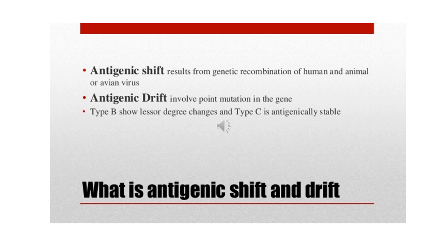Antigenic shift and drift is very important. The influenza A virus is unique among viruses because it is frequently subject to antigenic variation. These variations are both major and minor. When there is a sudden, complete, or major change, it is called an antigenic shift. When the antigenic change is gradual over a period of time, it is called an antigenic drift. Antigenic drift involves point mutation in the gene owing to selection pressure by immunity in the host population. Antigenic changes occur to a lesser degree in influenza B. Influenza C appears to be antigenically stable.